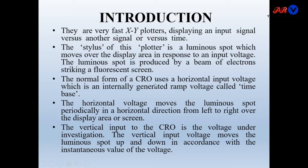The normal form of a CRO uses a horizontal input voltage which is an internally generated ramp voltage called the time base. Normally the CRO uses horizontal input voltage. This horizontal input voltage is a ramp voltage, also known as the time base voltage. This horizontal voltage moves the luminous spot periodically in a horizontal direction from left to right over the display area or screen.